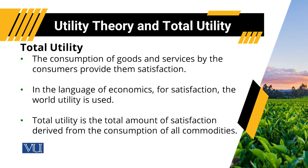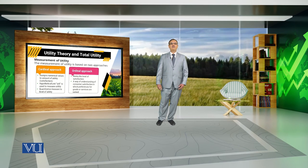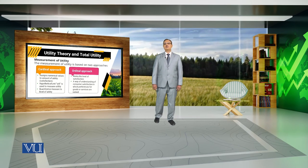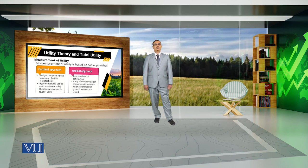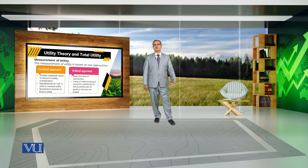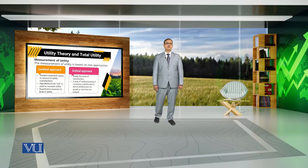For example, if someone uses one glass of milk, he is getting a certain level of satisfaction. And if he uses two glasses of milk, he will again get a certain level of satisfaction. Whenever we discuss the measurement of utility, there are two types: one carried out under the cardinal approach and the other under the ordinal approach.